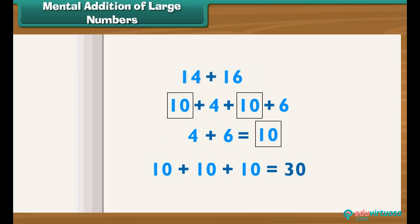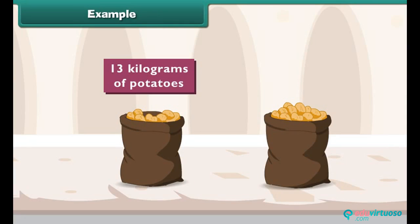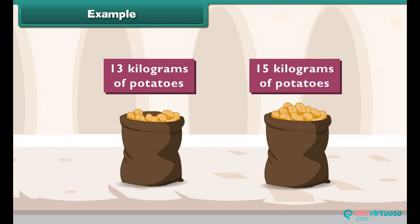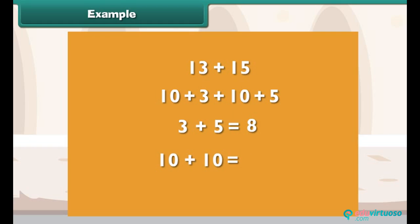So 14 plus 16 equals 30. Example: A sack contains 13 kilograms of potatoes and another sack contains 15 kilograms. How many kilograms are there in all? We must add 13 and 15. Break them into tens and ones: 10 plus 3 plus 10 plus 5. Then 3 plus 5 equals 8, and 10 plus 10 equals 20. So 20 plus 8 equals 28.